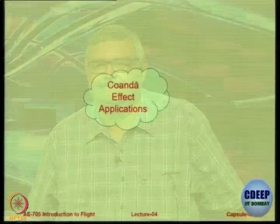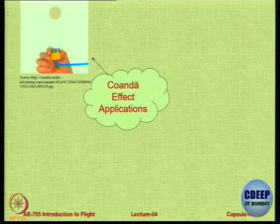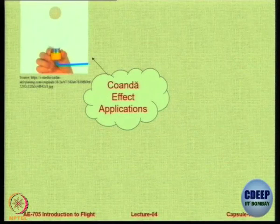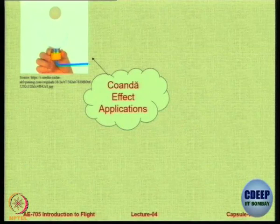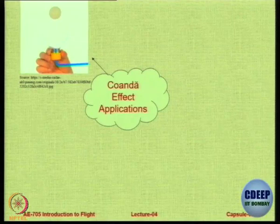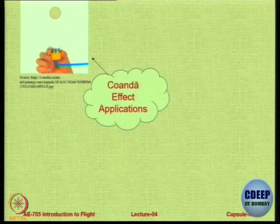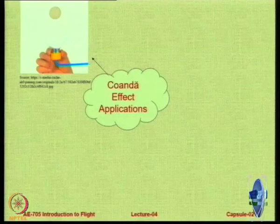We are interested more in the applications of the Coanda effect rather than the theory. For example, you can make a ball float in the air just by blowing a high pressure jet from the bottom. The air goes on both sides making it stable. When the ball goes to one side, the pressure brings it back; when it goes the other side, the pressure brings it back. So you can have a dancing ball just from a jet of air below it.